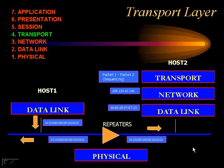The transmitting device sends three segments to the destination device. After receiving the three segments, the destination device sends an acknowledgement to the transmitting device. Once the transmitting device receives the acknowledgement, it then sends three more segments. If the transmitting station does not receive an acknowledgement from the receiving station, it will resend the segments after a timeout period. Since the receiving device may have overflowed its buffers, the transmitting device resends the segments at a slower rate.